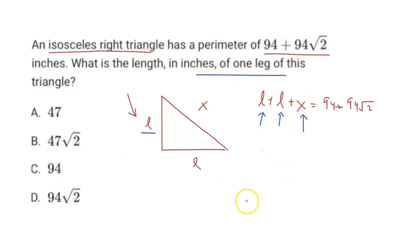So how do we do that? Well, we would have to use the Pythagorean theorem. So we know that in a right triangle, because this is an isosceles right triangle, a squared plus b squared equals c squared.